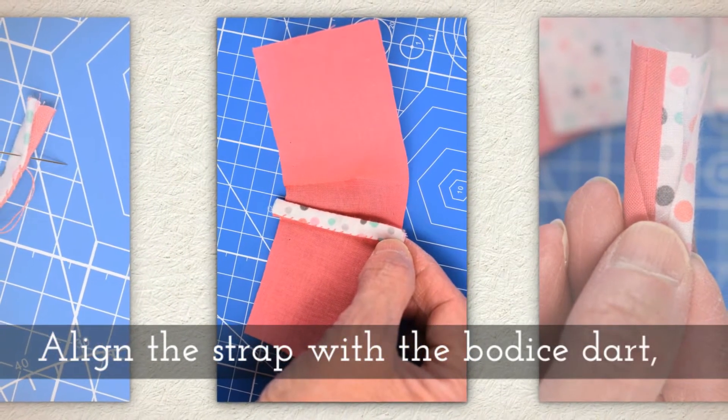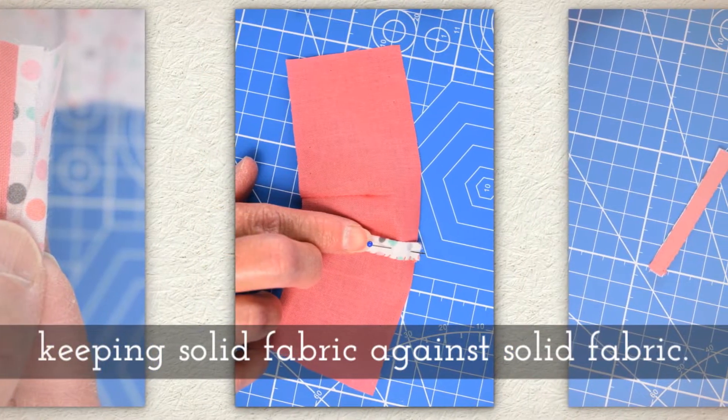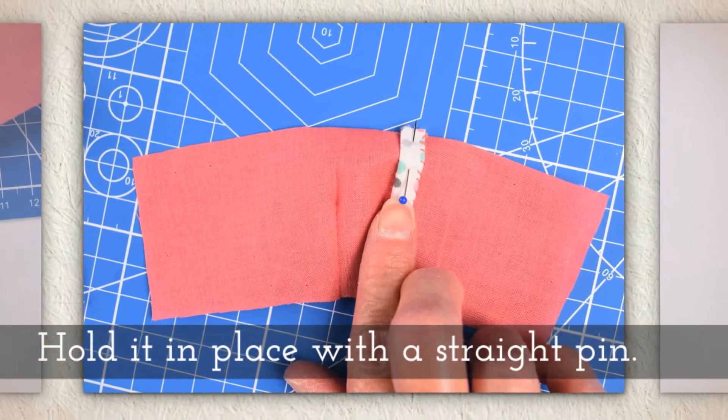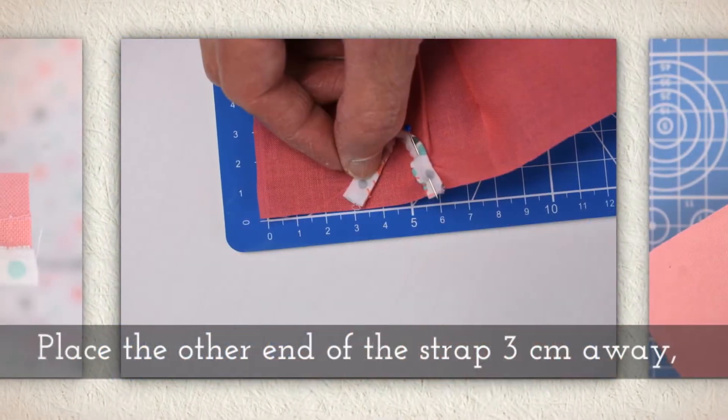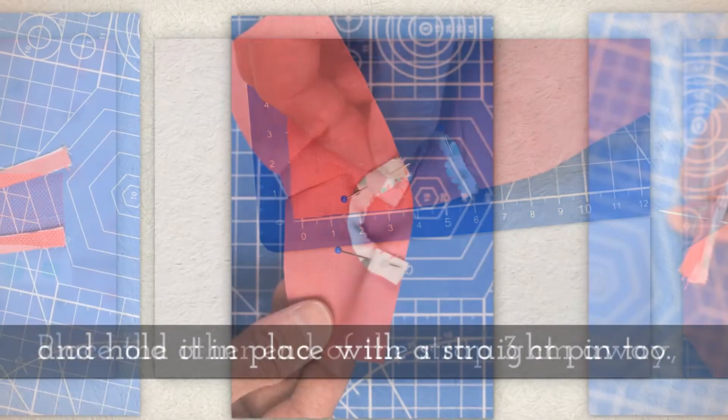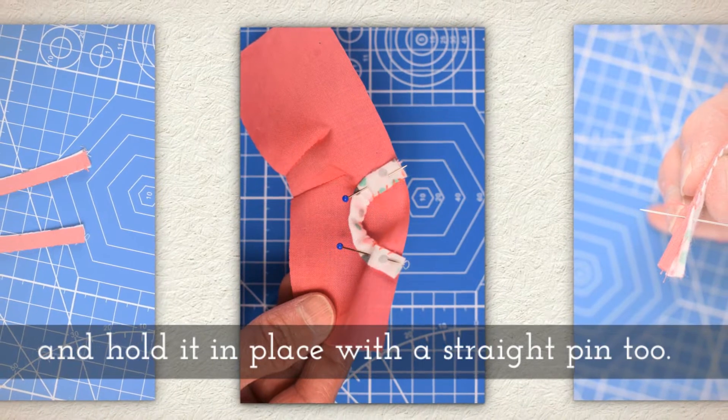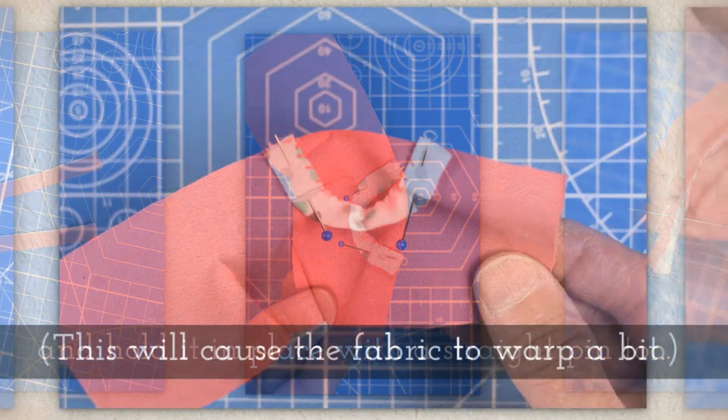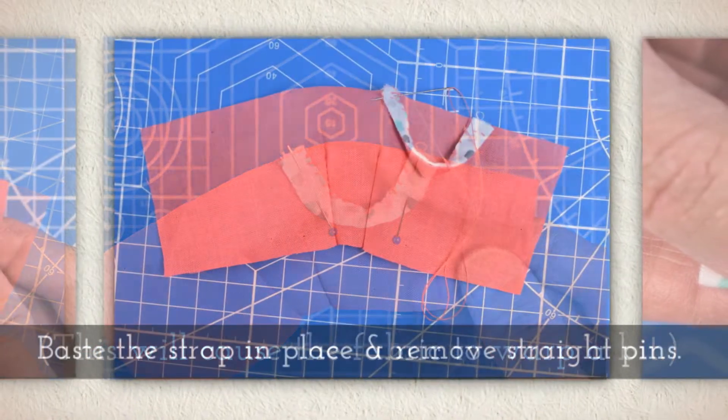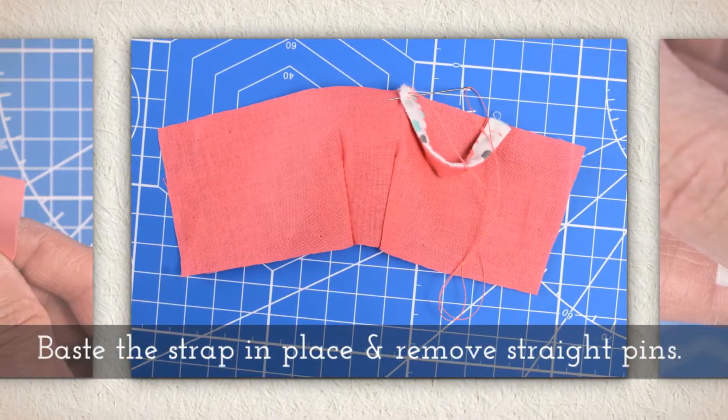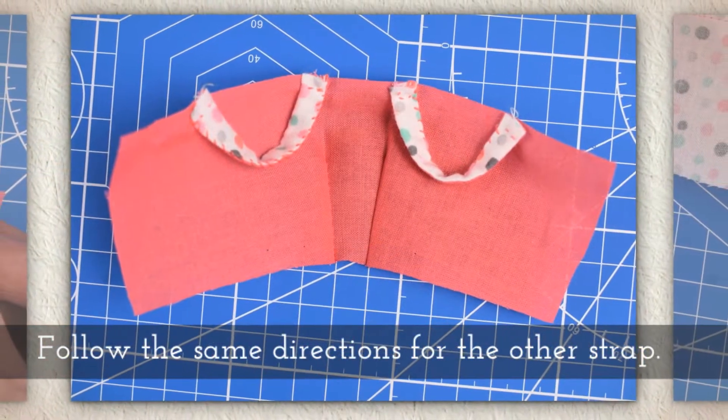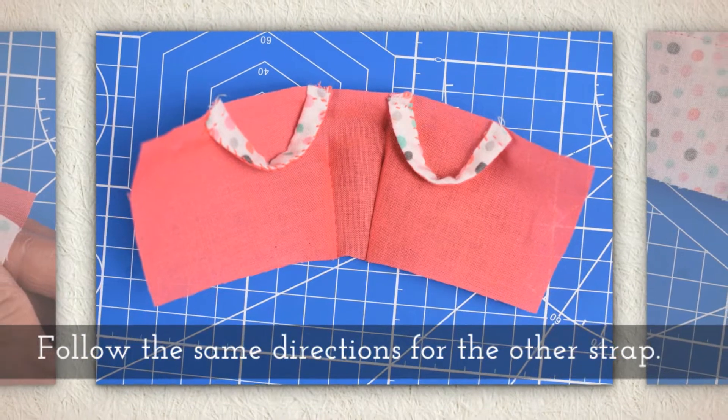Align one strap with the bodice keeping solid fabric against solid fabric. Hold it in place with a little straight pin and then place the other end of the strap about three centimeters away and hold it in place with a straight pin too. Now this is going to make your fabric warp a little bit and that's okay. Baste the strap in place and then you can remove the straight pins. Follow the same directions for the other strap.